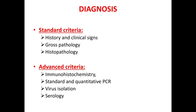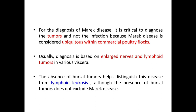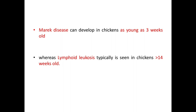For diagnosis, there are two criteria. The standard criteria involves history, clinical signs, gross pathology, and histopathology. The advanced criteria involves immunohistochemistry, standard and quantitative PCR, virus isolation, and serology. For the diagnosis of Marek's disease, it is critical to diagnose the tumors and not merely the infection, because Marek's disease is considered ubiquitous within commercial poultry flocks. Usually diagnosis is based on enlarged nerves and lymphoid tumors in various viscera. The absence of bursal tumors helps distinguish this disease from lymphoid leucosis, although the presence of a bursal tumor does not exclude Marek's disease.